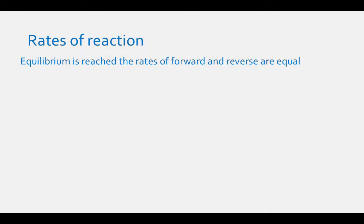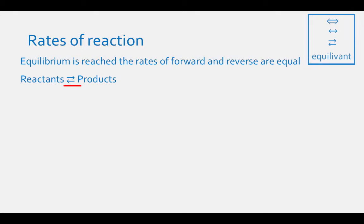We also mentioned the rates of the reaction: when equilibrium is reached, the rates of the forward and the reverse reaction are equal. Take for example a reaction where the reactants are in equilibrium with the products. An equilibrium arrow is different than a reaction arrow, in that an equilibrium arrow is double-sided. There are a couple different ways you might see an equilibrium arrow drawn, but they all mean the same thing.